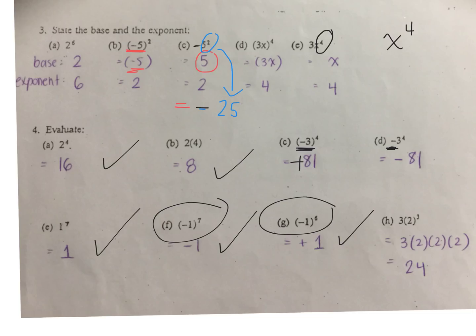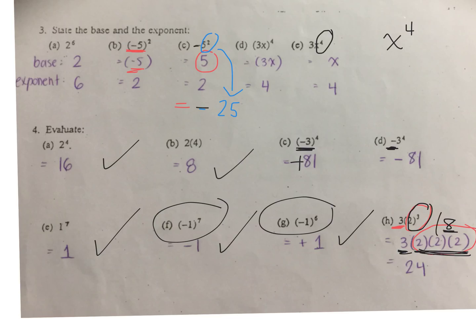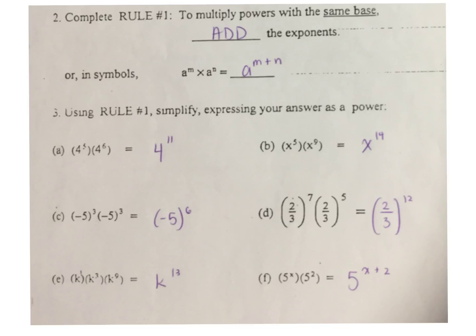This is very important — some of you made a mistake on your last test. We have to evaluate 2 to the power of 3 before we multiply it by 3. So what's 2 to the power of 3? 2 times 2 times 2 is 8. What's 3 times 8? 24.